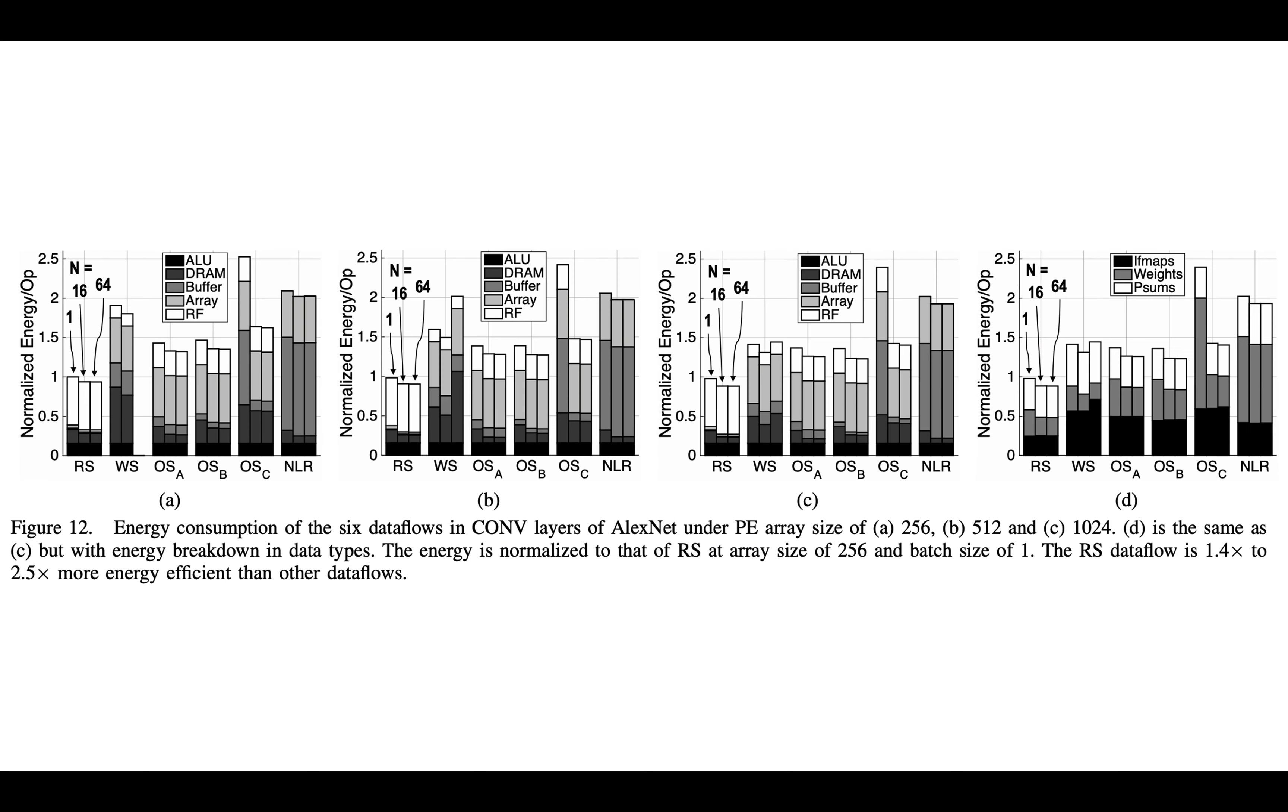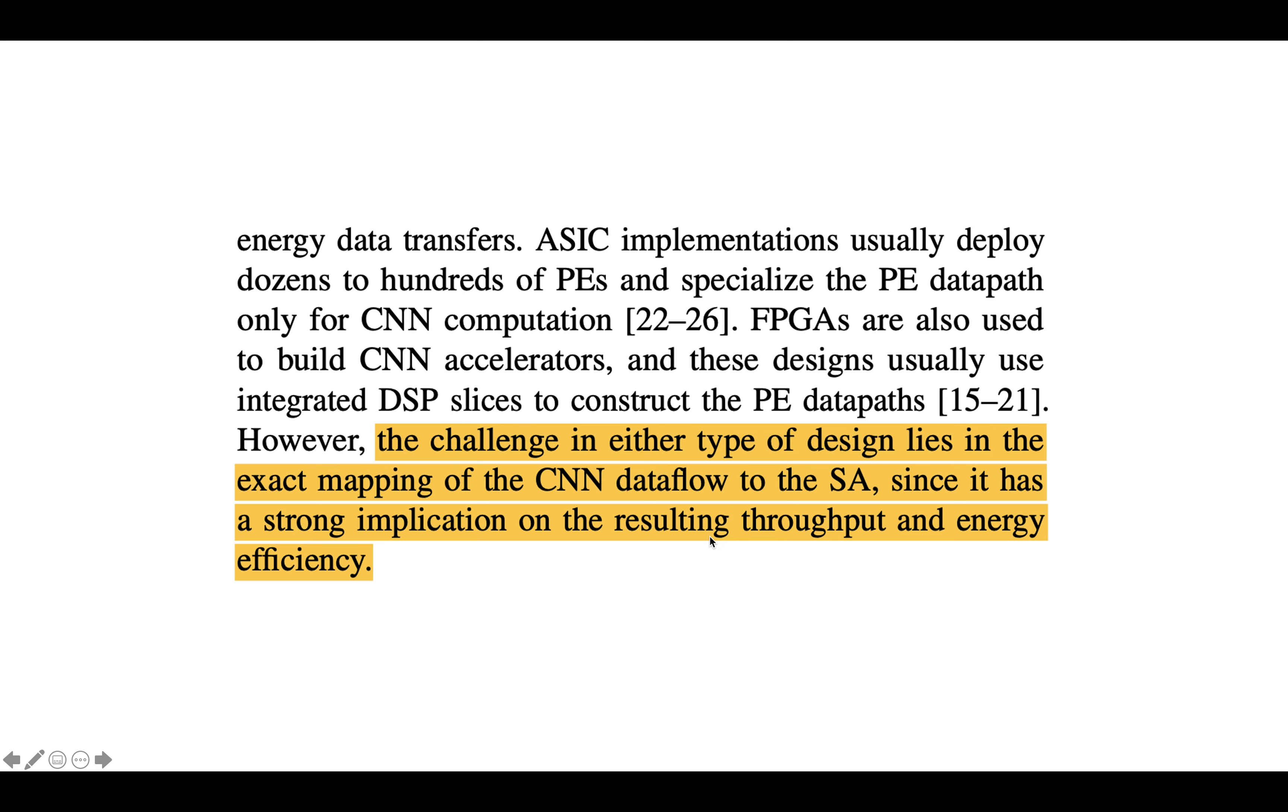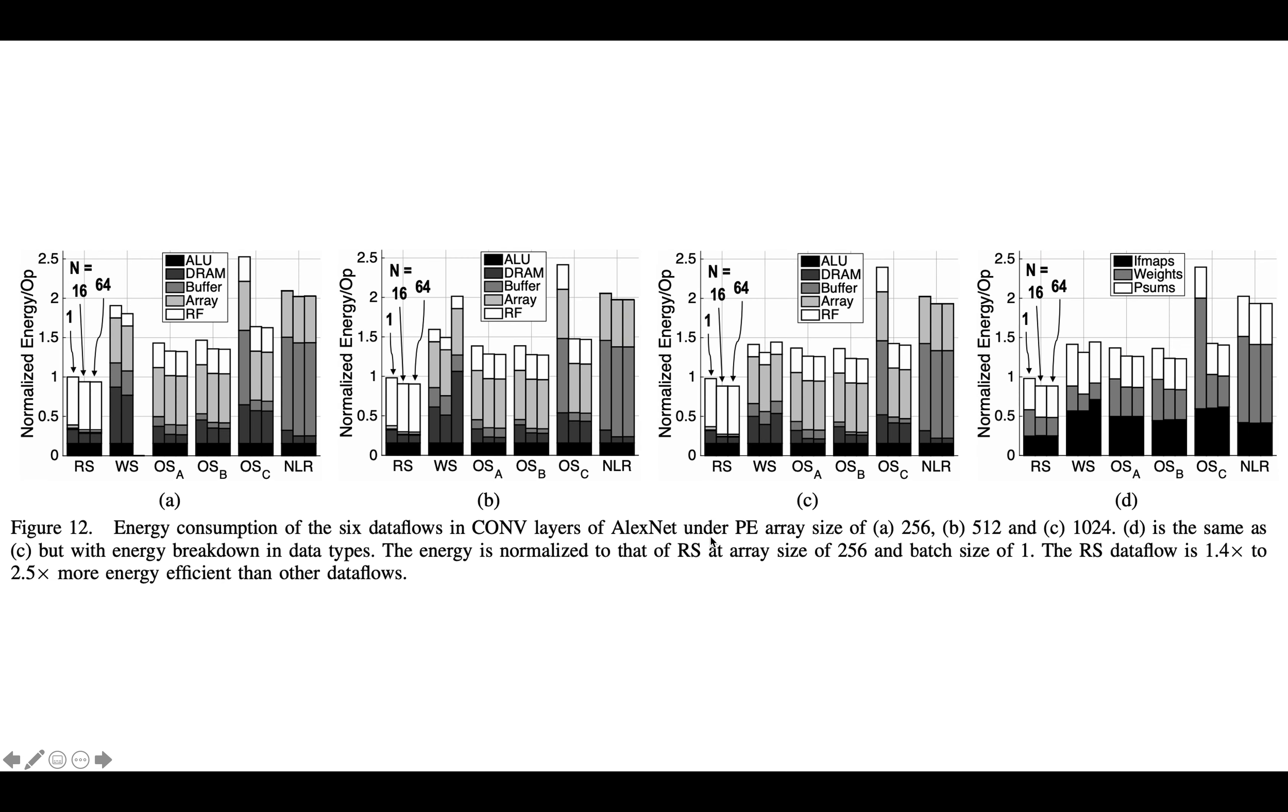So here's what I'd say is the most important chart from the paper. It's figure 12, and it's energy consumption of the six data flows in conv layers of AlexNet under PE array size of 256, 512, and 1024.